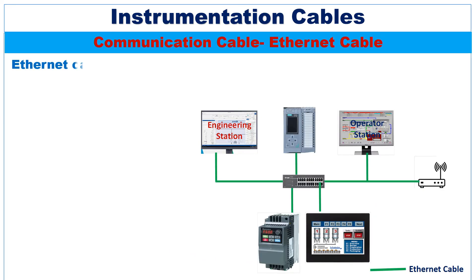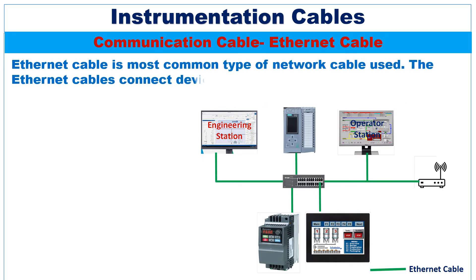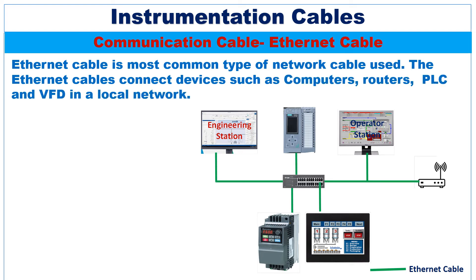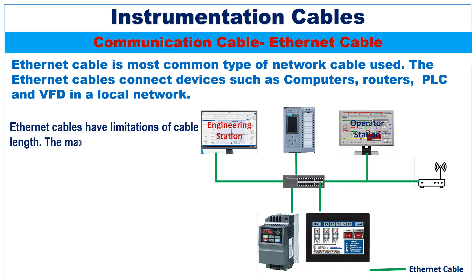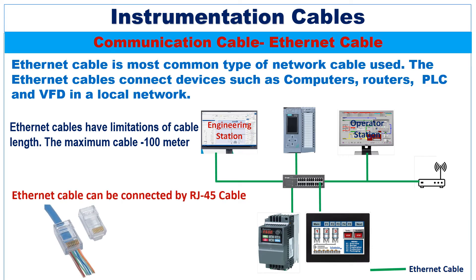Ethernet cable is the most common type of network cable. It connects devices such as computers, routers, PLCs, and VFDs in a local network. Ethernet cables have a limitation on cable length — the maximum cable length is 100 meters. If a network cable is too long, it will not carry a good network signal. Ethernet cables can be connected through RJ45 connectors.